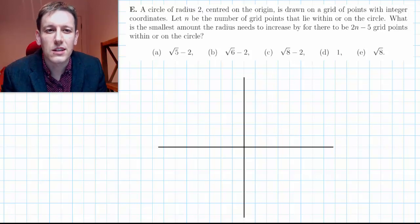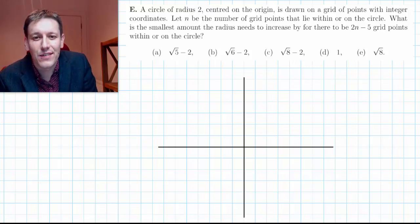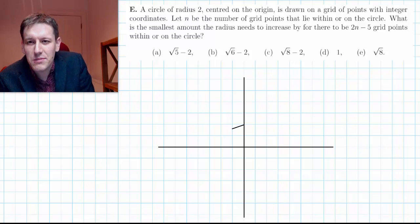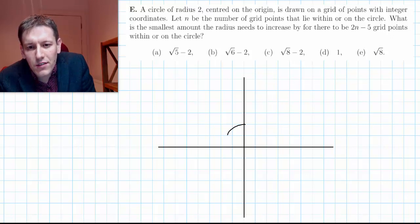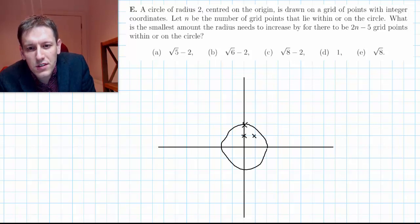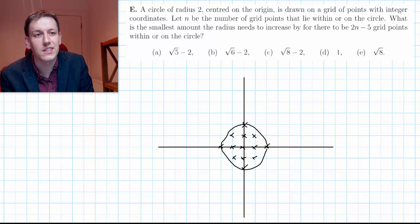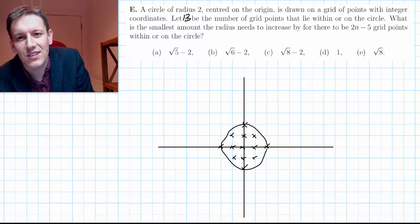The first thing to notice is that n is just a number we can work out — there's nothing really algebraic about it. With a circle of radius 2, all we need to know is how many grid points are in here — those that lie within or on the circle. Counting them up: this one, this one, this one... going around, I get 13 points total.